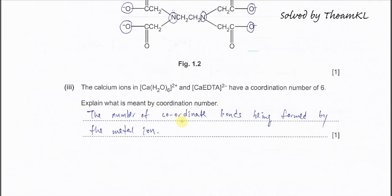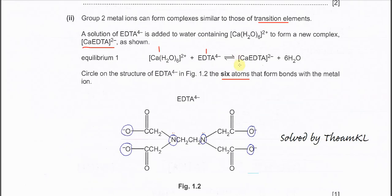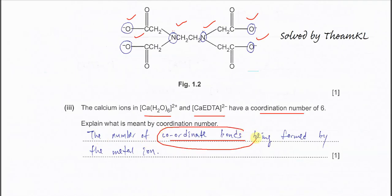Part 3. The calcium–EDTA complex and the calcium [Ca(H2O)6]²⁺ both have a coordination number of six. Explain what is meant by coordination number: it refers to the number of dative bonds (coordinate bonds) that form. Because EDTA has six donor atoms, it can form six dative bonds, giving a coordination number of six. It is simply the number of coordinate bonds formed.